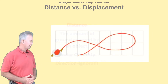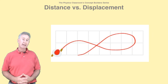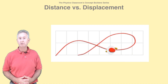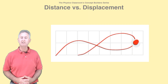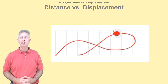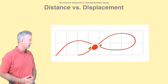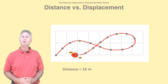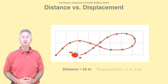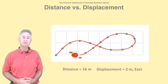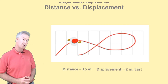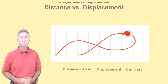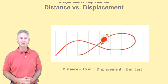This animation of a man walking along the ground demonstrates the difference between distance and displacement. When the man is done, he's walked a distance of 16 meters, but he finishes 2 meters east of his starting place. We would say he's displaced 2 meters to the east.